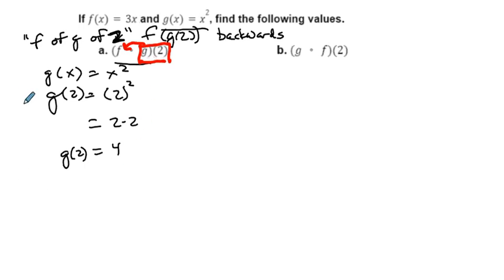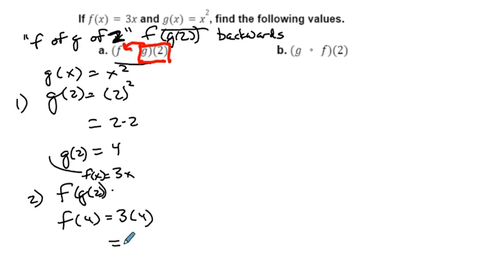And so now step 2 is taking this and putting this value into my f function. So we have f of g of 2. This is basically what we're doing. So when we do that, my function is 3x. That's my f of x. So we're going to take this value and input it wherever x is. The value of g of 2 is 4. So we're finding the value of 4. Let's put it in here. So we have 3 times 4, and that gives me 12.